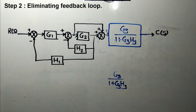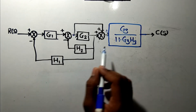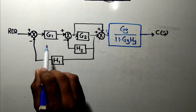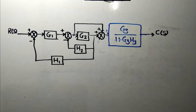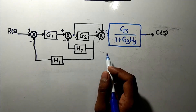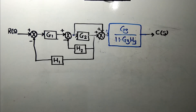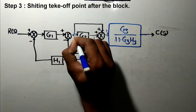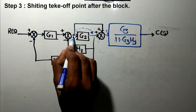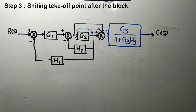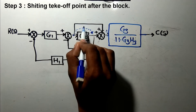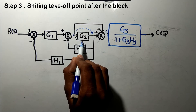After step two, we look at the diagram again. We can't directly solve any of the first three rules — series block, parallel block, or feedback loop — and therefore what we will do next is either shift a takeoff point or a summing point. This is generally the next rule to apply. In the next step I will shift this takeoff point to after the block.